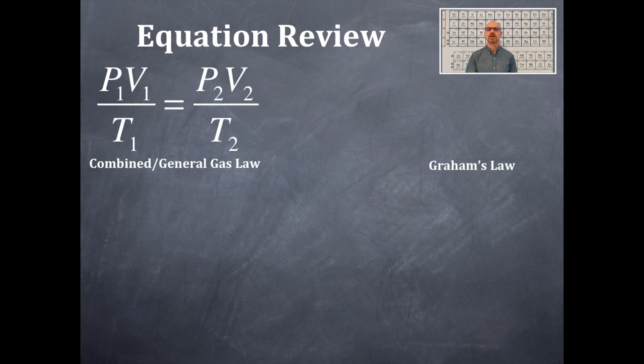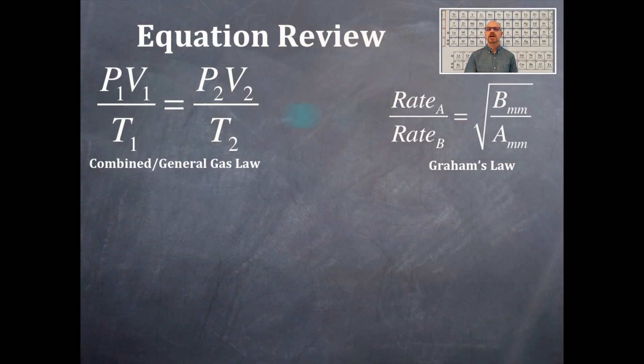Another equation that we're going to need to know is Graham's law. And here is Graham's law. Graham's law is letting us know how much faster or how much slower one gas is compared to another gas at the same temperature. So that's why it's the rate of gas A over the rate of gas B is equal to an inverse relationship. That's why the B is over the A, and the MM is for molar mass. So it's an inverse of their molar masses and a square root. So we'll see how that applies later on.